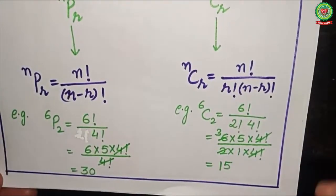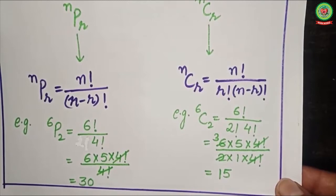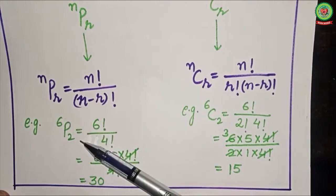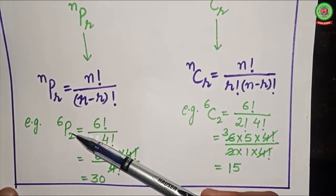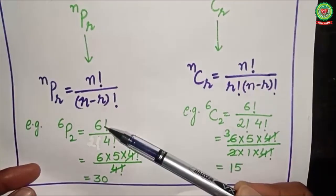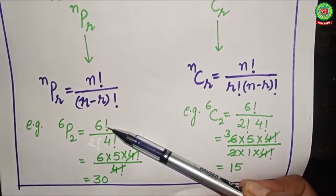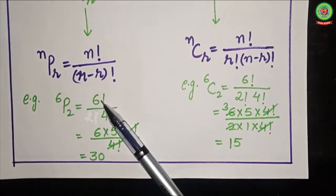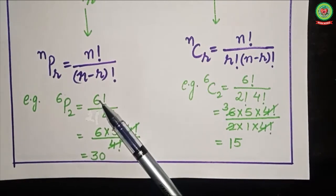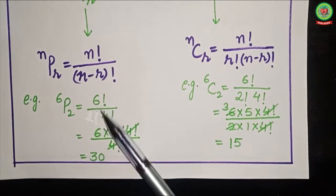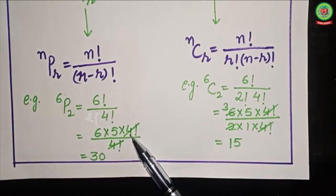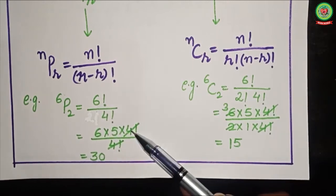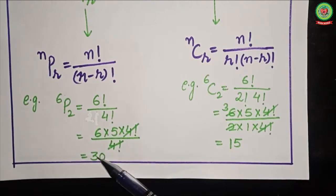For example, let's solve 6P2. Here n = 6 and r = 2. Applying the formula: 6P2 = 6! / (6−2)! = 6! / 4!. We expand 6! down to 4! as 6 × 5 × 4!, then cancel the 4! in the denominator. The answer is 6 × 5 = 30.